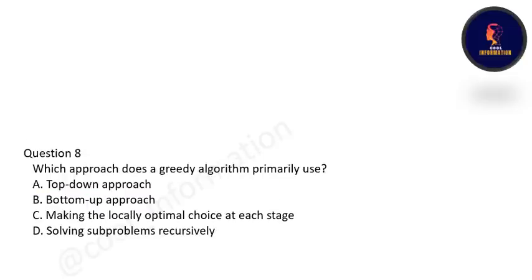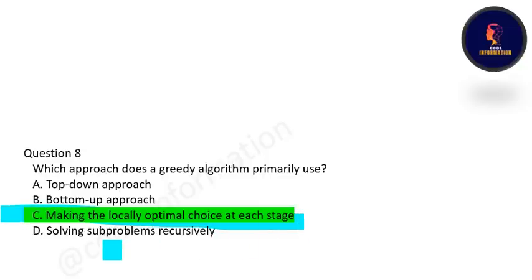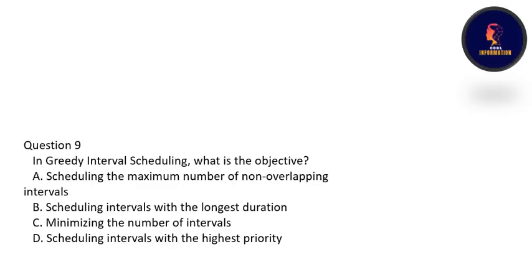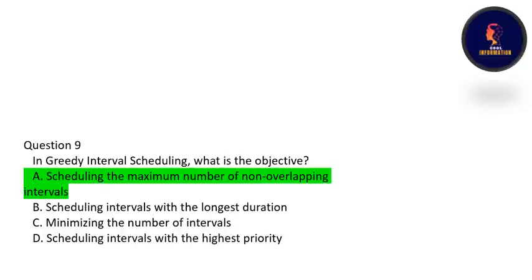Which approach does a greedy algorithm primarily use? A greedy algorithm uses making the locally optimal choice at each stage — option C is correct. In greedy interval scheduling, what is the objective? The objective is to schedule the maximum number of non-overlapping intervals. Option A is correct.